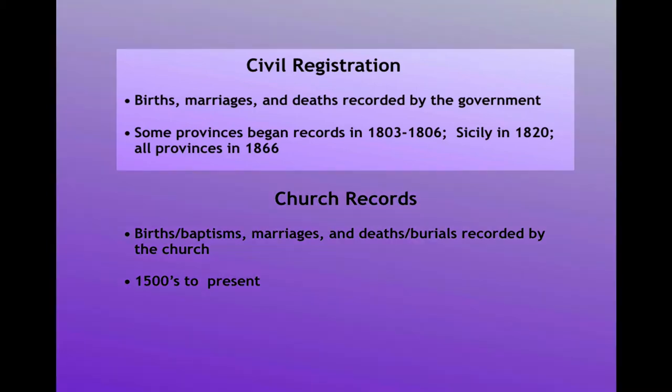Civil registration records are the births, marriages, and deaths that were recorded by the government. In some parts of Italy, they began in the early 1800s. In Sicily, they began in 1820. But by 1866, all the provinces in Italy were keeping these records.